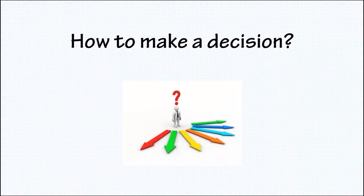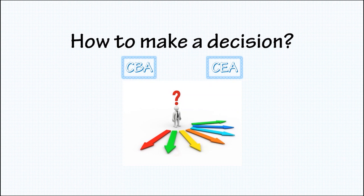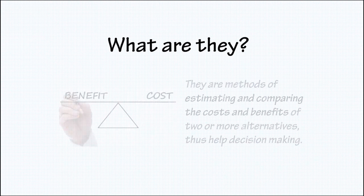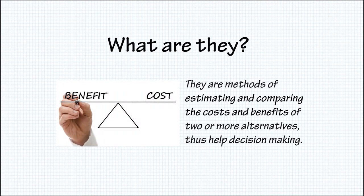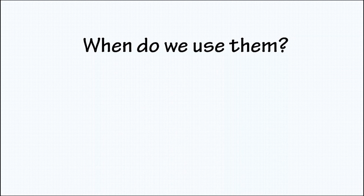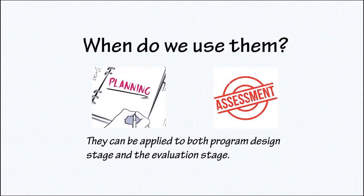How to make a decision? That is where CBA and CEA can help a lot. In general, both of them are economic techniques that can help to make decisions by estimating costs and benefits, quantifying and comparing the economic advantages and disadvantages in many different categories. They are not only helpful in the program design stage but also at the evaluation stage in order to assess whether the expectation is well realized.